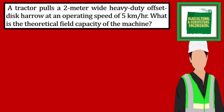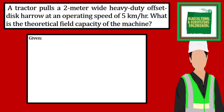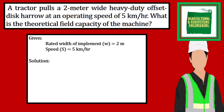The first thing we have to identify is the given. We have the rated width of implement of 2 meters, and the speed of 5 km per hour. Now we proceed with our solution. Theoretical field capacity is equal to the speed of 5 km per hour times the width of 2 meters, all over the constant of 10.